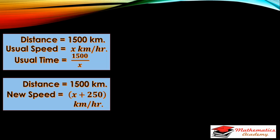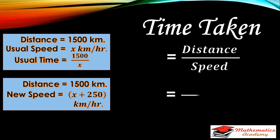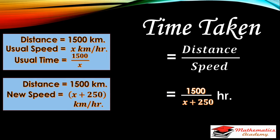The distance is the same, but the speed is increased to X plus 250 km per hour. So the time taken in this case is again distance upon speed, therefore the time taken will be 1500 upon X plus 250.